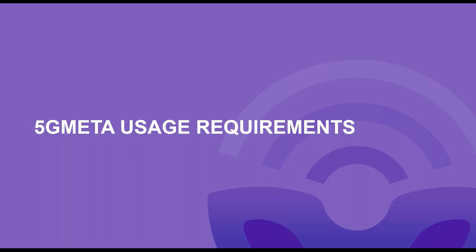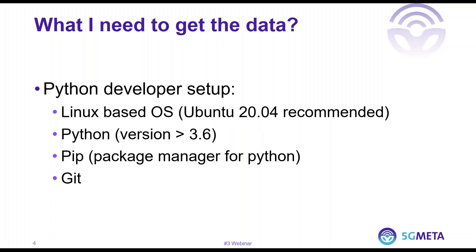First, let's start with the basics, describing what the developer in your team needs to bring in order to be up and running, developing your app using the data gathered from the platform as fast as possible. Since 5G Meta is an IoT messaging platform, you will need a way of getting the messages to your laptop. For this reason, you will need a Python developer setup. We suggest to have a Linux-based Ubuntu 20.04 system with Python installed with the version greater than 3.6. Also, pip to install the required libraries for Python and git to clone the code samples from the repositories. You can also try with a cold environment setup in a Windows machine, but the support for it is experimental at this point in time.